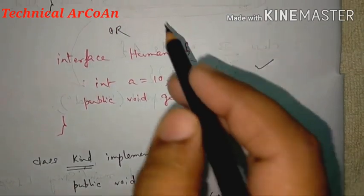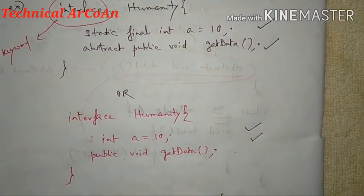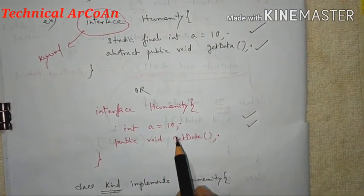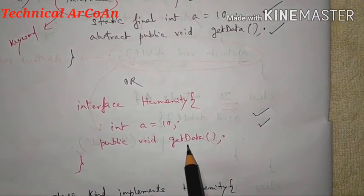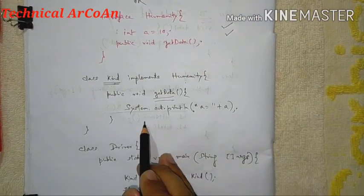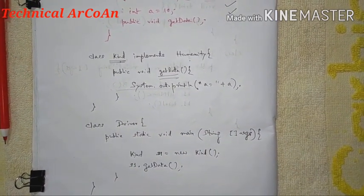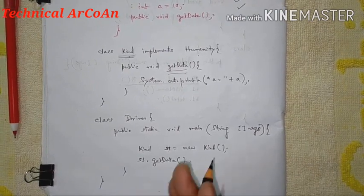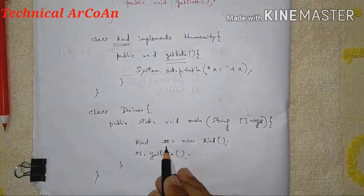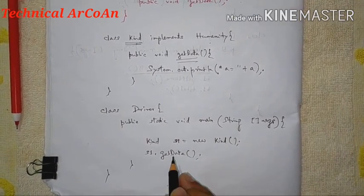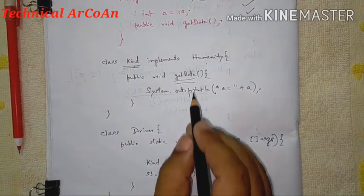So, the interface contains one constant variable 'a' and one abstract method 'getData'. The body of that abstract method is declared within the class where the interface is implemented. We never create an object of the interface — we never instantiate it directly. That's why the class Kind creates the object, and through that object we can access the method getData.